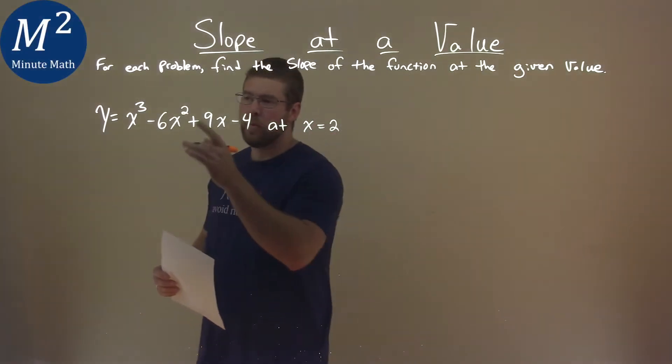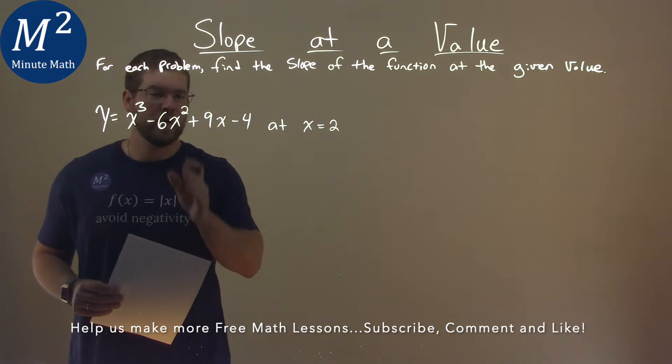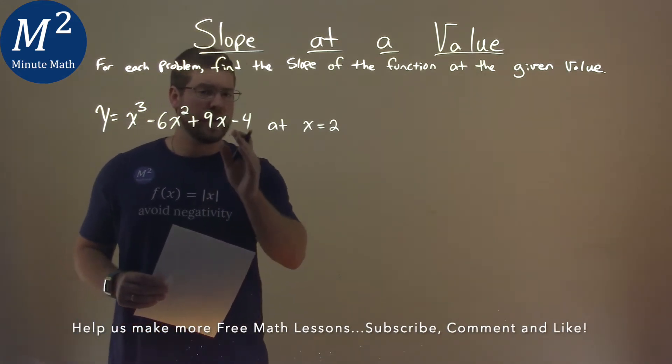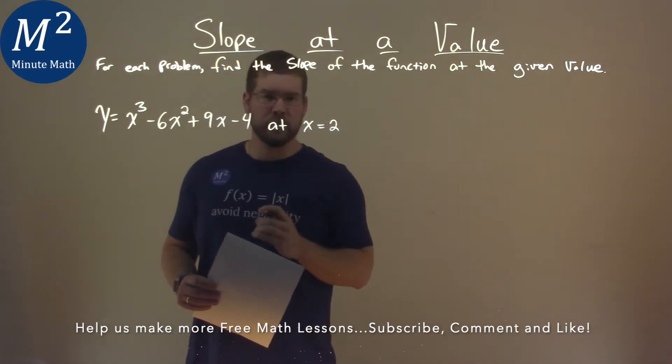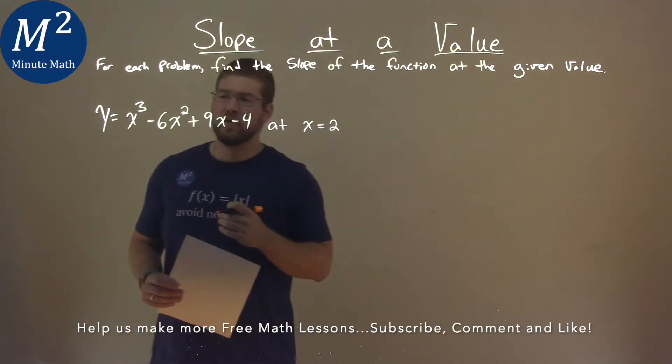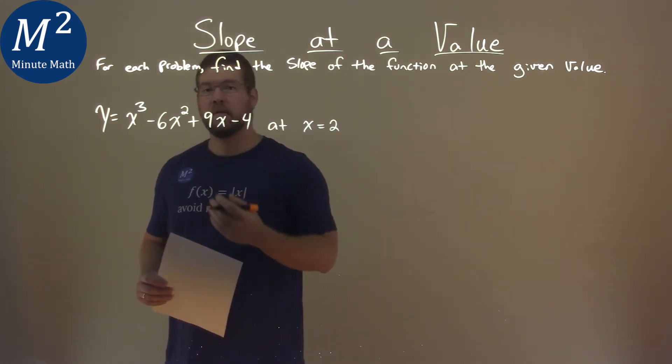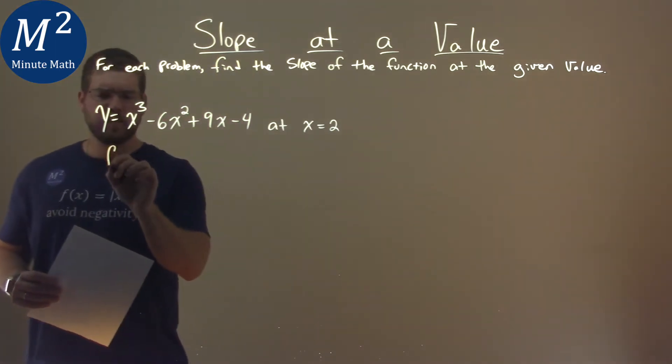We're given this problem right here: y equals x to the third power minus 6x squared plus 9x minus 4, and we need to find the slope of this function at x equals 2. Well, our first step on this journey is finding the derivative of the function, which is pretty easy with the power rule.